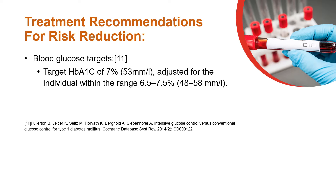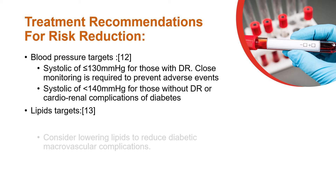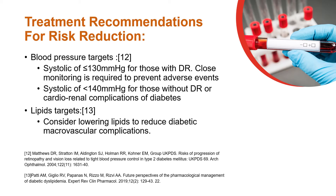Recommendations for treatments to reduce the risk of diabetic eye disease include achieving blood glucose targets, blood pressure targets, and lipid targets. The target glycosylated hemoglobin is 7% and should be maintained within the range 6.5 to 7.5%. The target systolic blood pressure is less than or equal to 130 mmHg for those with diabetic retinopathy. In those without diabetic retinopathy or cardiorenal complications, a systolic blood pressure of less than 140 mmHg should be maintained. In those with diabetic macrovascular complications, consider lowering lipids.